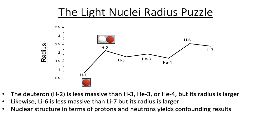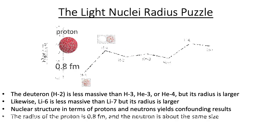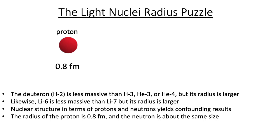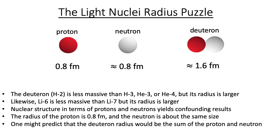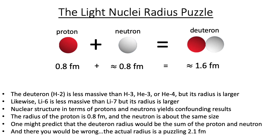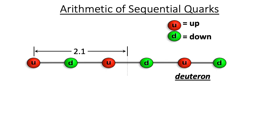Consider the proton-deuteron relationship, for example. The radius of the proton is 0.8 femtometers, and the neutron is about the same size. One might expect that the deuteron radius would be the sum of the proton and the neutron — and there you'd be wrong. The actual radius is a puzzling 2.1 femtometers. When we present the deuteron as an alternating series of quarks, however, the resulting arithmetic is quite straightforward.